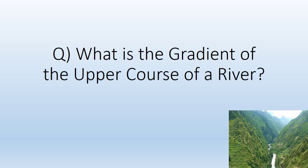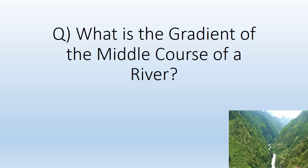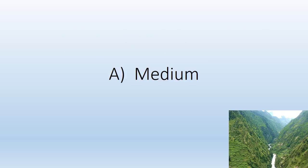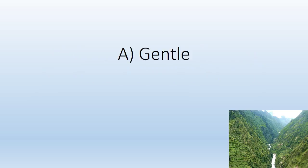What is the gradient of the upper course of a river? Steep. What is the gradient of the middle course of a river? Medium. What is the gradient of the lower course of a river? Gentle.